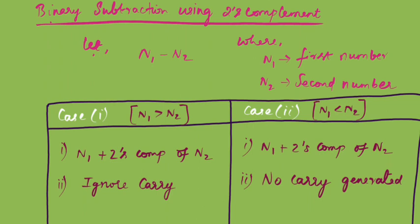If n1 is greater than n2, what are the steps we need to follow? First step: n1 plus two's complement of n2. Previously we used n1 plus one's complement of n2 — that was the one's complement method. Whereas in the two's complement method, we use n1 plus two's complement of n2. Second step: ignore the carry. Here there is a clear difference in the second step — previously we add the carry, but now we have to ignore the carry.